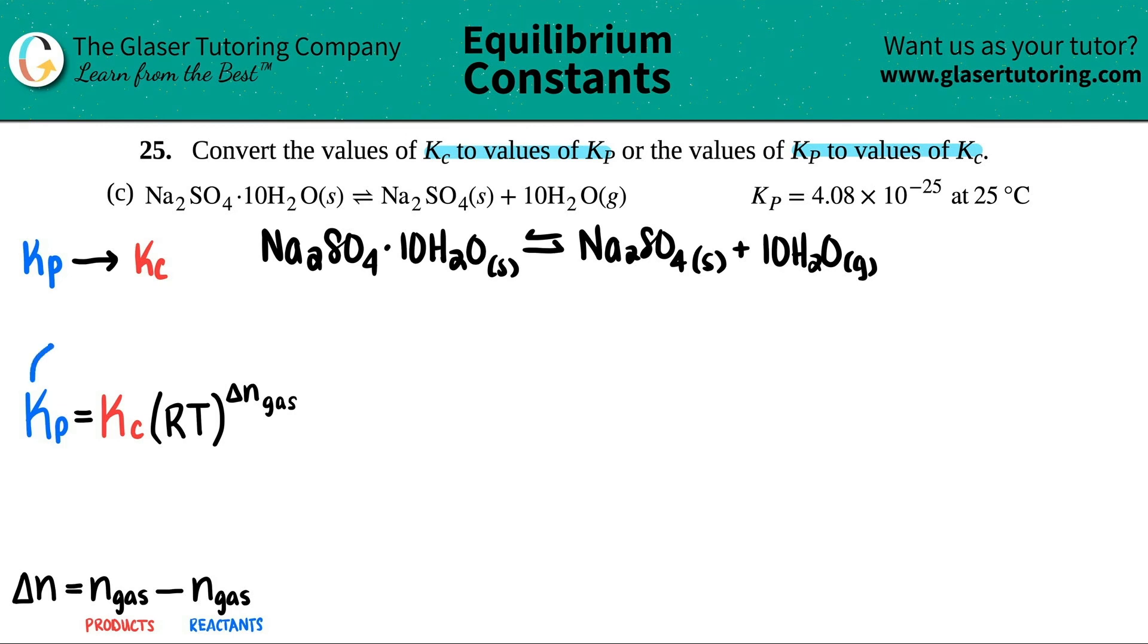So in this case, they gave me a Kp value, 4.08 times 10 to the negative 25. And we're solving for the Kc. So I could label this as X. You could label it as Kc, doesn't matter. But now I need to know what RT and the delta n gas is.